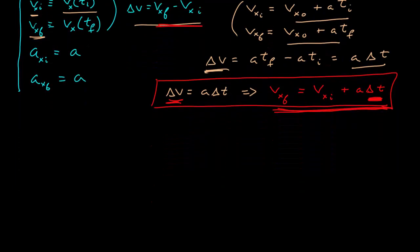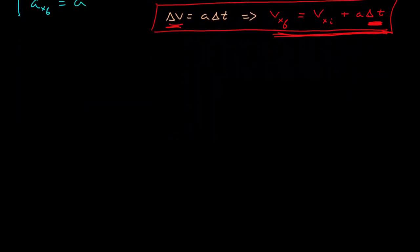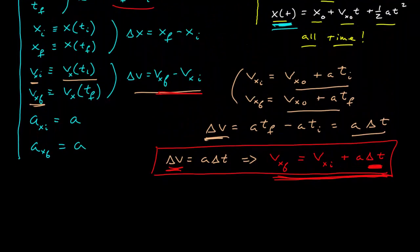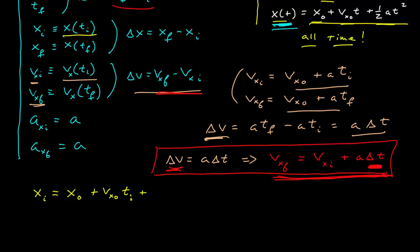Now we have delta v. Let's calculate delta x. The initial position is the position function evaluated at the initial time — that's x₀ plus the initial velocity times t_initial, plus one half times the acceleration times t_initial squared. The final position is x₀ plus the velocity at t equals zero times t_final, plus one half times the acceleration times t_final squared. I've just used the position function, plugging in those times to get the initial and final position.